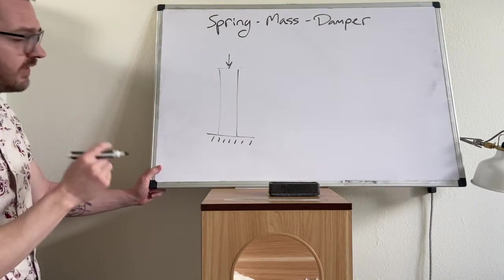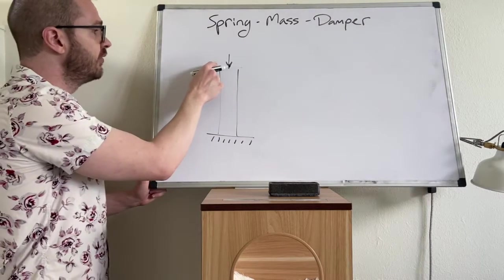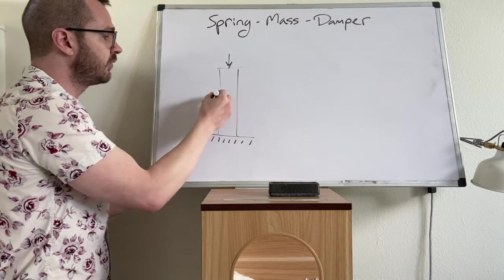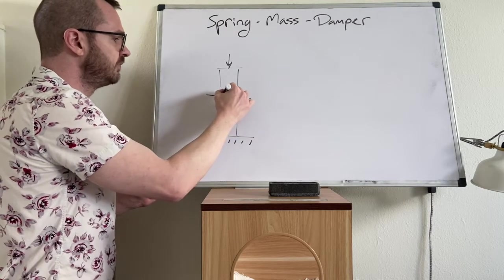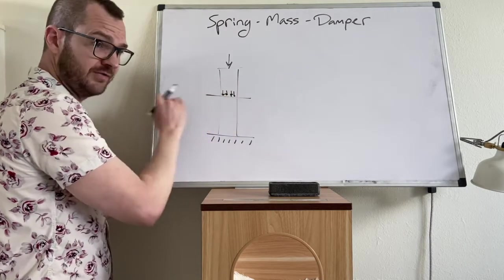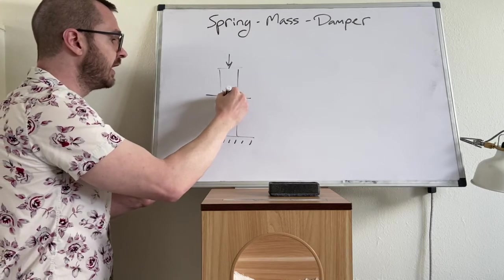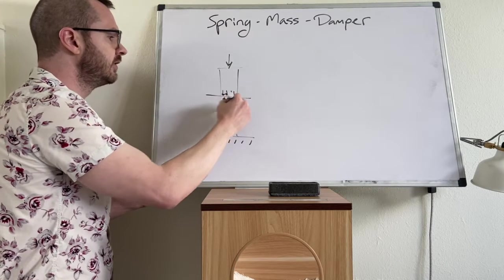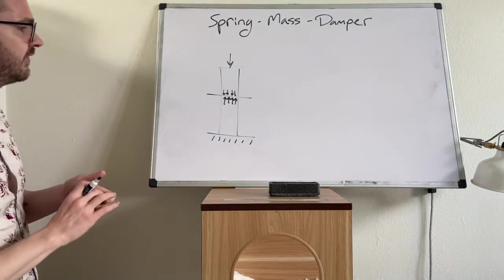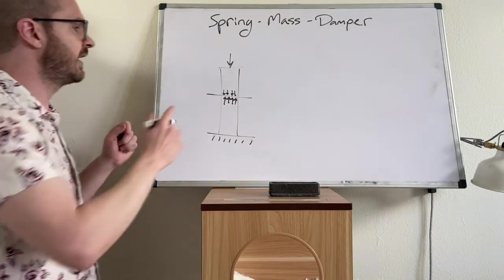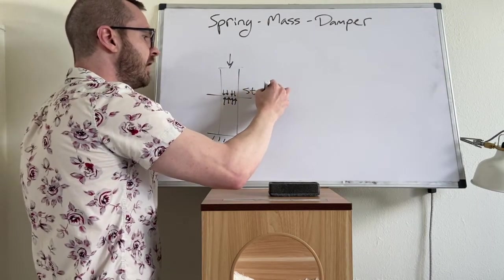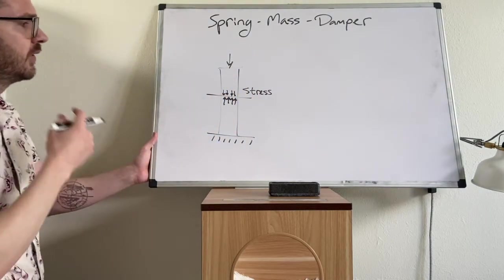Now first thing that's going to happen when you apply this loading, this support column is going to have some internal pressure and we could just cut a section right through the support column and we would find pressure along this line. This is the stress inside of the column and the stress arises from the applied load.